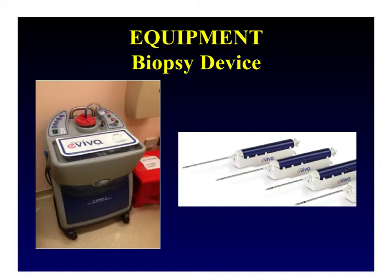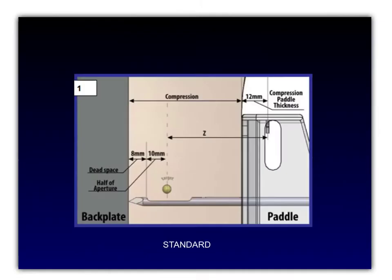At our institution we use the Hologic-Serosaviva vacuum-assisted core biopsy device, connected to the ATEC biopsy system which controls the vacuum. We have two different types of Aviva needles, both 9 gauge but with different size apertures. The standard needle has an aperture length of 20 mm, whereas the petite has an aperture length of 12 mm. The dead space just beyond the aperture in the standard needle is 8 mm. We rarely use the petite needle, but when we do it is to sample a target in a smaller breast. Both work the same way.